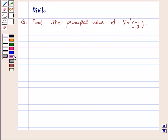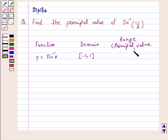Now we know that if the function is y equals sine inverse x, its domain is closed interval minus 1 to 1, and the range of its principal value branch is closed interval minus pi by 2 to pi by 2.